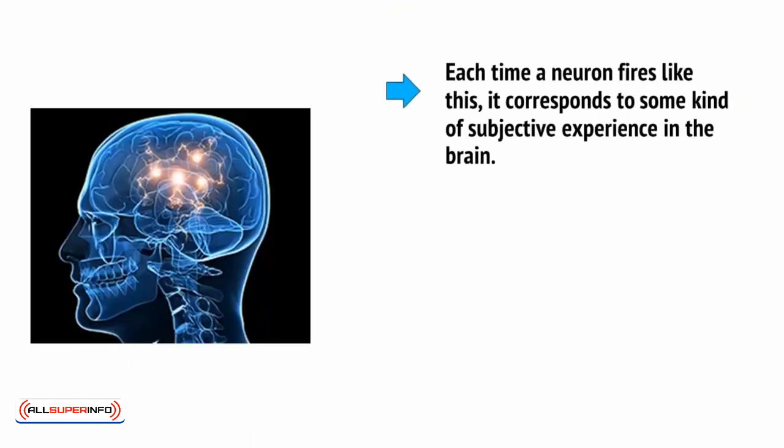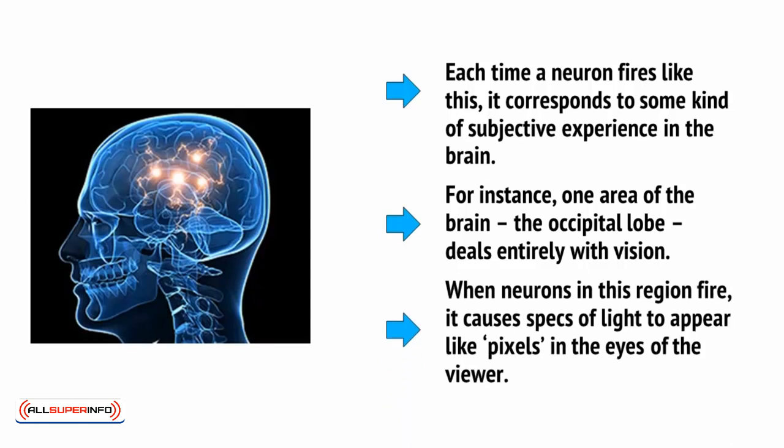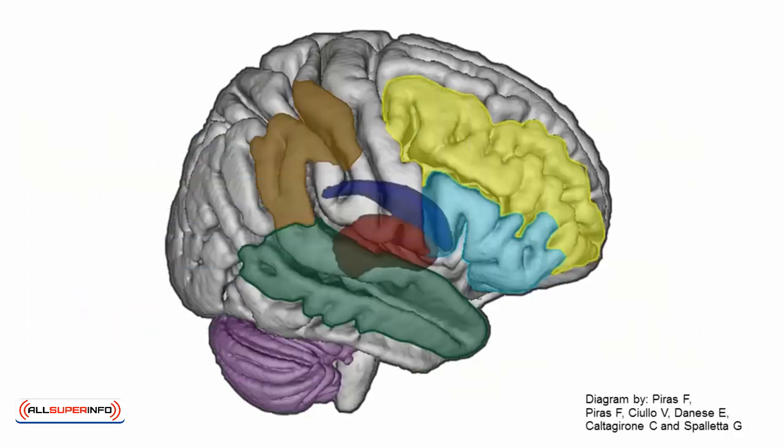Each time a neuron fires like this, it corresponds to some kind of subjective experience in the brain. For instance, one area of the brain, the optical lobe, deals entirely with vision. When neurons in this region fire, it causes specks of light to appear like pixels in the eyes of the viewer. Meanwhile, other neurons might make us remember a specific event, experience a smell, move a finger, or fall asleep.